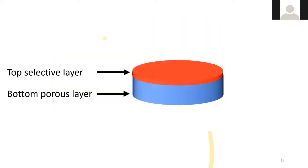Two layers are formed: the top layer, where water diffuses quickly, is the selective layer with smaller pores, while the bottom layer provides mechanical support with large cavities. These membranes are typically ultrafiltration membranes with pore sizes ranging from 50 nanometers to 1 micron.